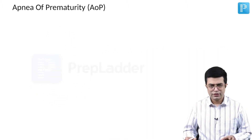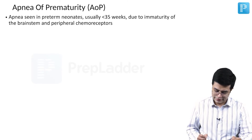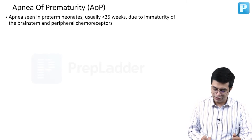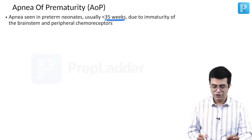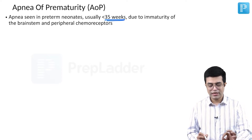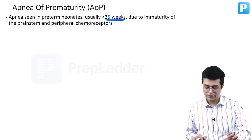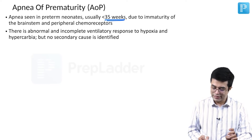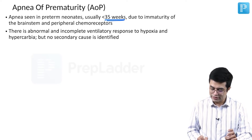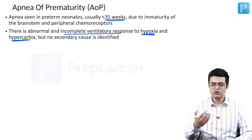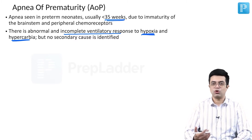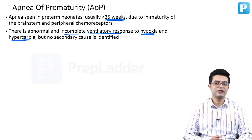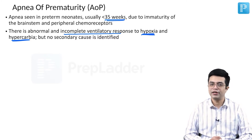Let us talk about AOP in slightly more detail. It is the apnea seen in preterm units, usually less than 35 weeks, due to immaturity of the brainstem and peripheral chemoreceptors. There is an abnormal and incomplete ventilatory response to hypoxia as well as hypercarbia, but there is no underlying secondary cause for this abnormal response. It tends to improve as the gestational age of the child improves.